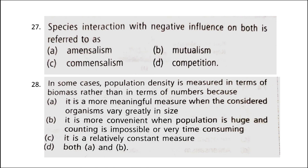Next: species interaction with negative influence on both is referred to as — the correct answer is option D: Competition. Competition is defined as the active demand by two or more individuals of the same species or members of two or more species at the same trophic level for a common resource. Intraspecific competition is competition among members of the same species for food, space, and mate. Interspecific competition is rivalry among members of different species. The severity of competition depends upon the similarity in requirements for food and shelter.